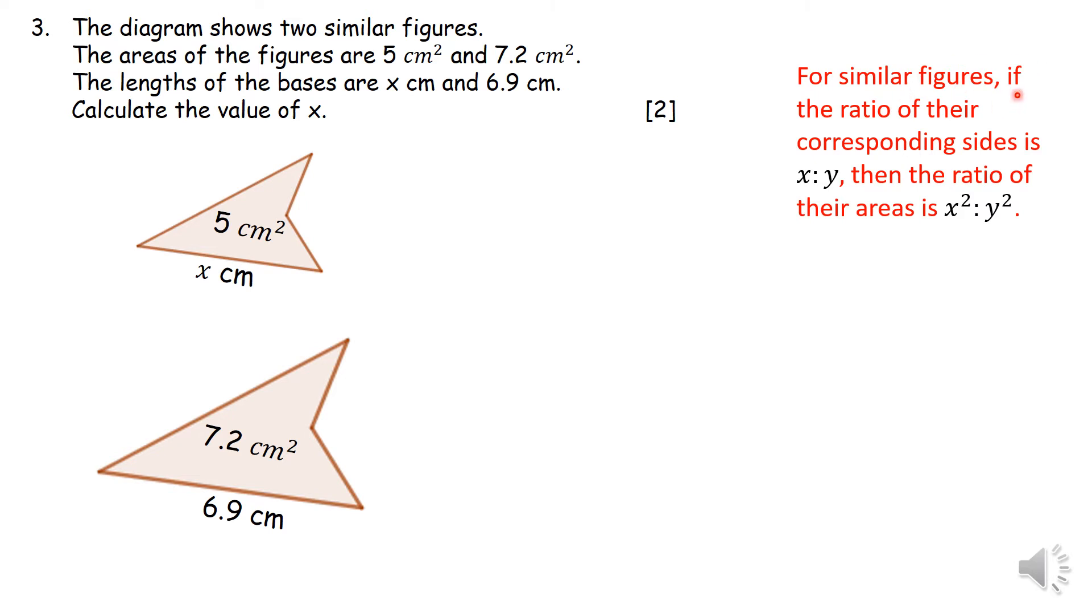So when you are dealing with similar figures, the ratio, the fraction of the corresponding sides, if it's x and y, like for example, you have got x and 6.9, it will then equal to the ratio of the areas that you square them. So in simple terms, this is what I'm saying in short. Then you take the area of the smaller one over the area of the bigger one, and you take the sides, and you square it. So the area of the small one over the area of the big one should equal to the square of the sides.